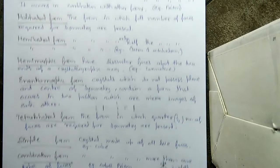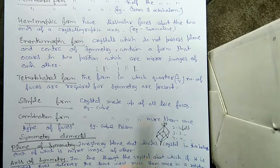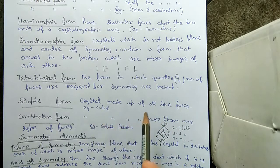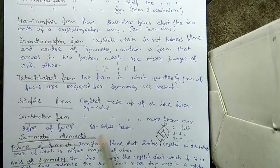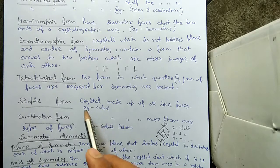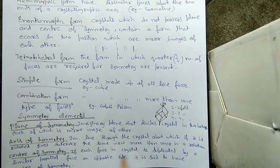Now, what is a simple form and a combination form? A crystal made up of only one type of face is called a simple form, and a crystal made up of more than one type of face is called a combination form. An example of a combination form is present, and an example of a simple form is the cube.